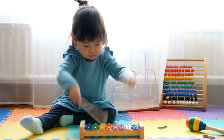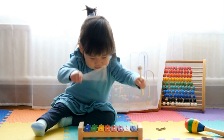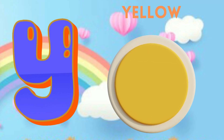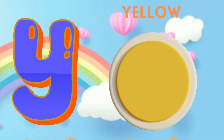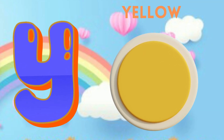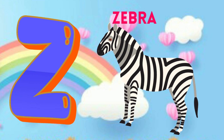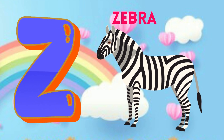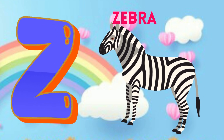Y is for yellow, ye-ye-yellow. Z is for zebra, z-z-zebra.